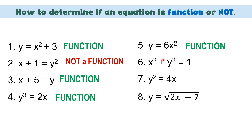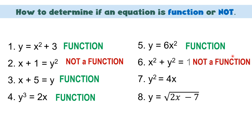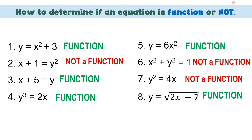Number 6: x² + y² = 1. Here, y² has an exponent of 2, which is even, so this is not a function. Number 7: y is raised to 2 — again, 2 is even, so this is not a function. Number 8: y is raised to 1 — therefore, this equation is a function.